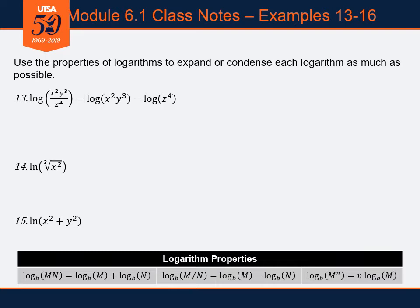From there, in the first logarithm — log of x squared y cubed — I see a product: x squared times y cubed, a product of two terms inside the logarithm. I can use my product rule to split that up into a sum of two separate logarithms: log of x squared plus log of y cubed.